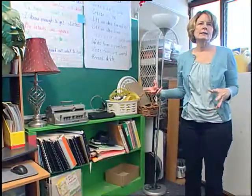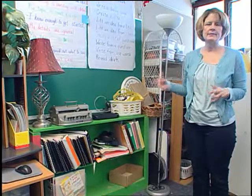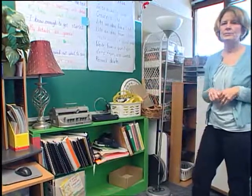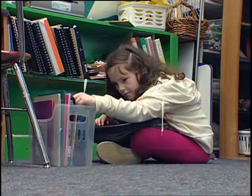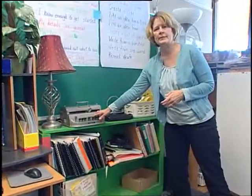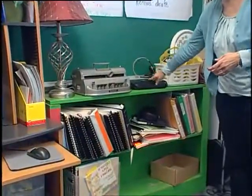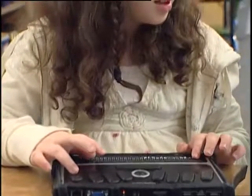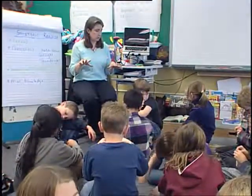We try to organize the classroom to make it easy for the student to find the things that they need in a timely manner and to make some choices about what they're going to do. We have this shelf set up and her book choices are here. The manual Braille writer that she's been using sits here so she knows where to find it. And she has a new tool — a new Braille writer called a Braille Note that she has just begun to learn to use.